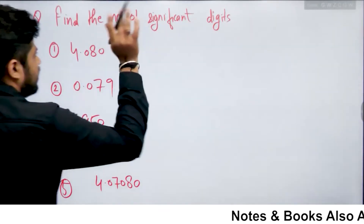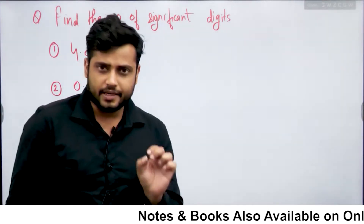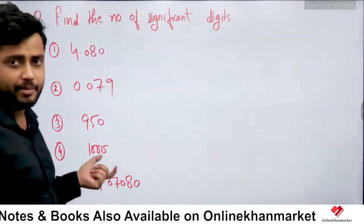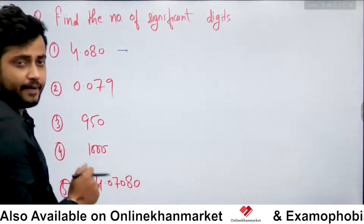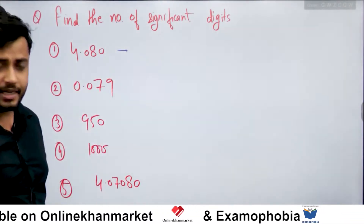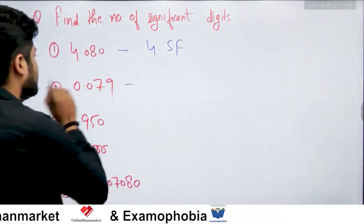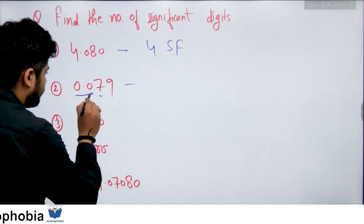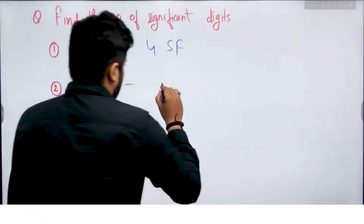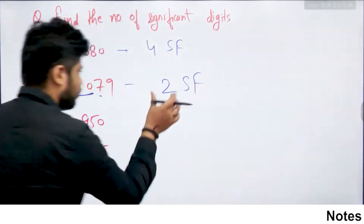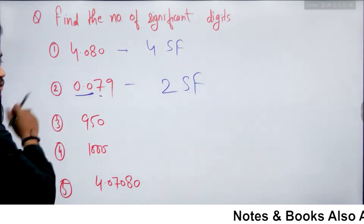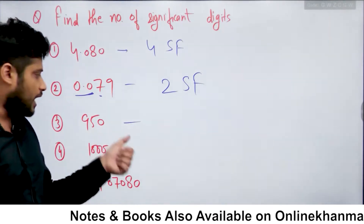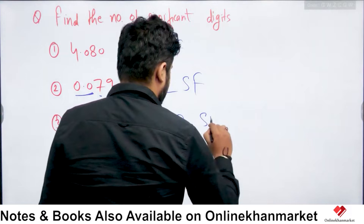Ab yahan par kuch problems solve karne ki koshish karte hain. The first problem is: find the number of significant digits in all of these measured values. Humko assume karna hoga ki yeh saari ki saari cheezein kuch na kuch physical quantity ki measurement hain. In the first number — yeh decimal number hai, and the trailing zeros in a decimal number are significant — to yahan par 4 significant figures hain. In the second number — yeh number less than one hai, aur jab bhi number ek se kam hoga, then all the zeros to the left of the first non-zero digit woh significant nahi hongi — to yahan par sirf 2 significant figures hain. 0.079 mein yeh saari ki saari zeros non-significant hain. For 950, yahan par bhi do significant figures hain. Trailing zeros in a non-decimal number — end mein jo zeros hain yeh significant nahi hongi — to yahan par sirf 2 significant figures hain.